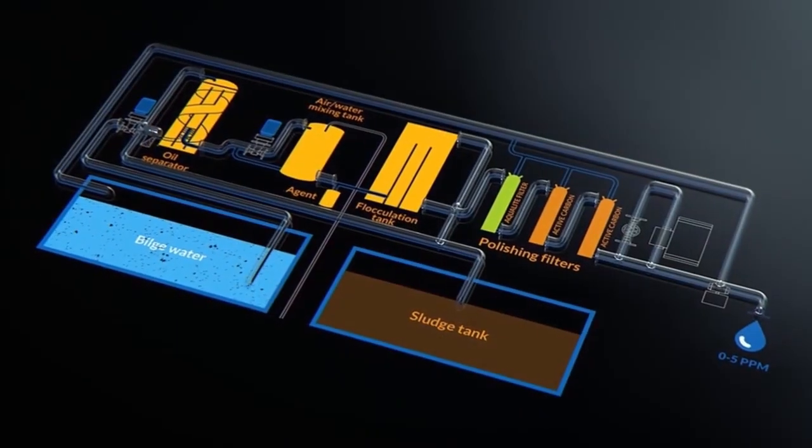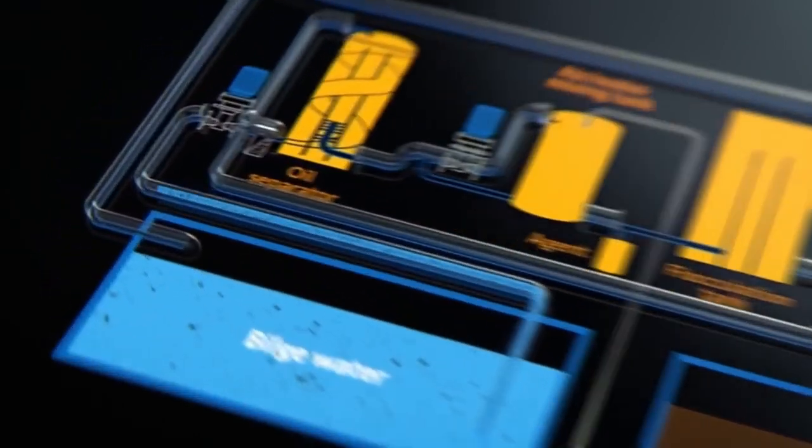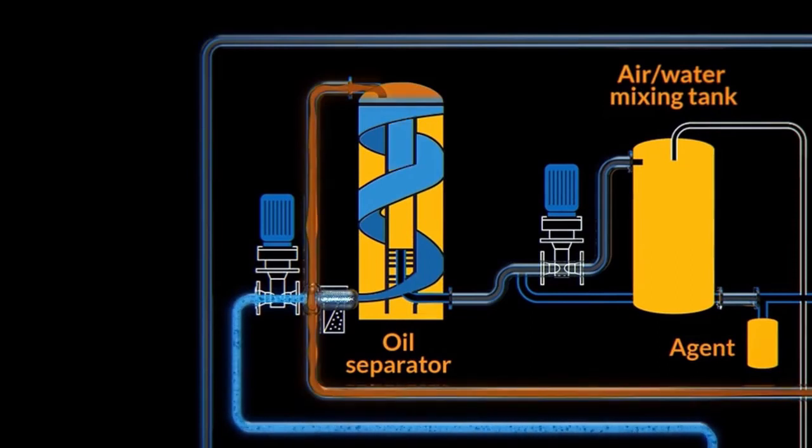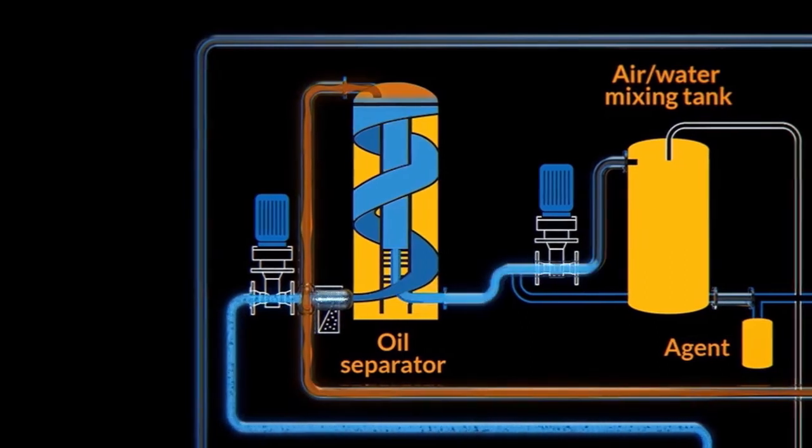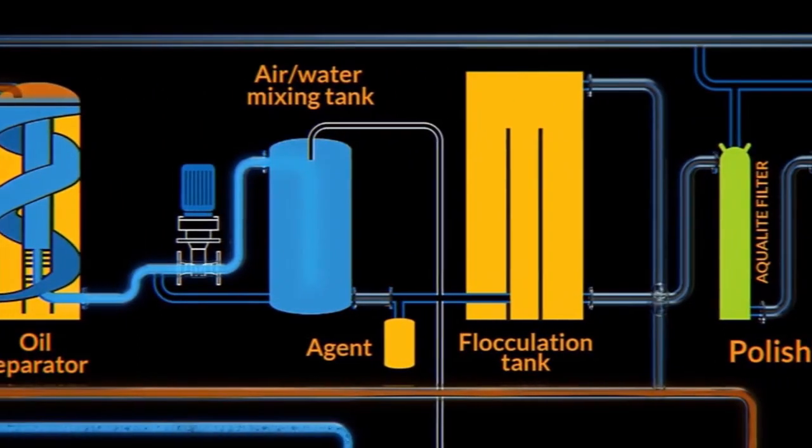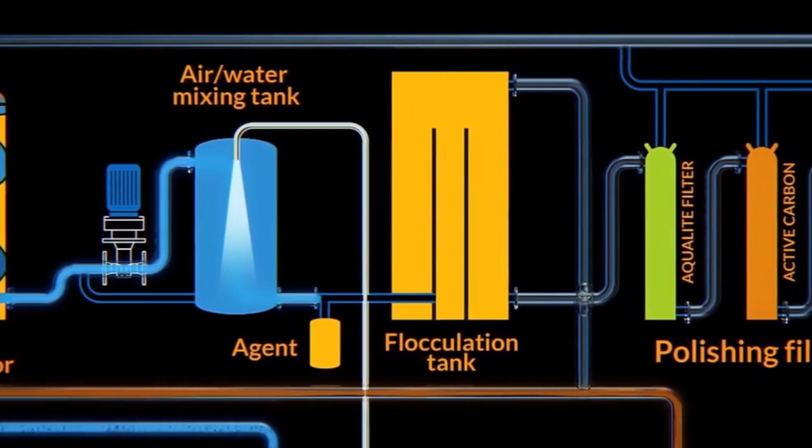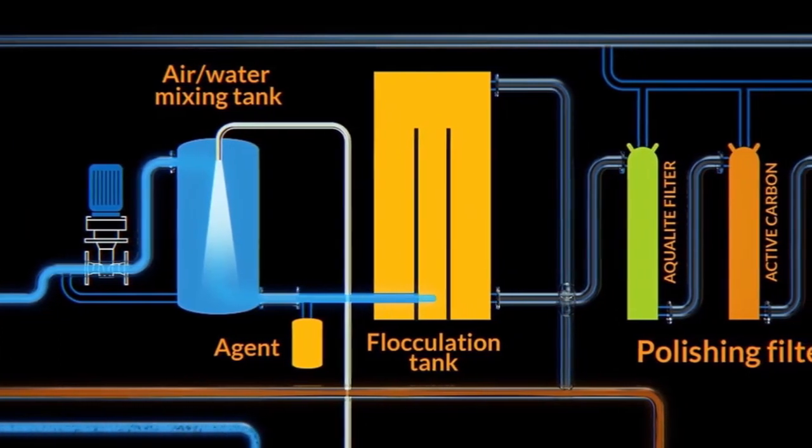Stages of separation in a flocculation type bilge separator: Step 1 is oil separation. In step 2, the water goes through a circulation pump and into an aeration chamber where the water will be mixed with air. In step 3, the flocculation process is started.